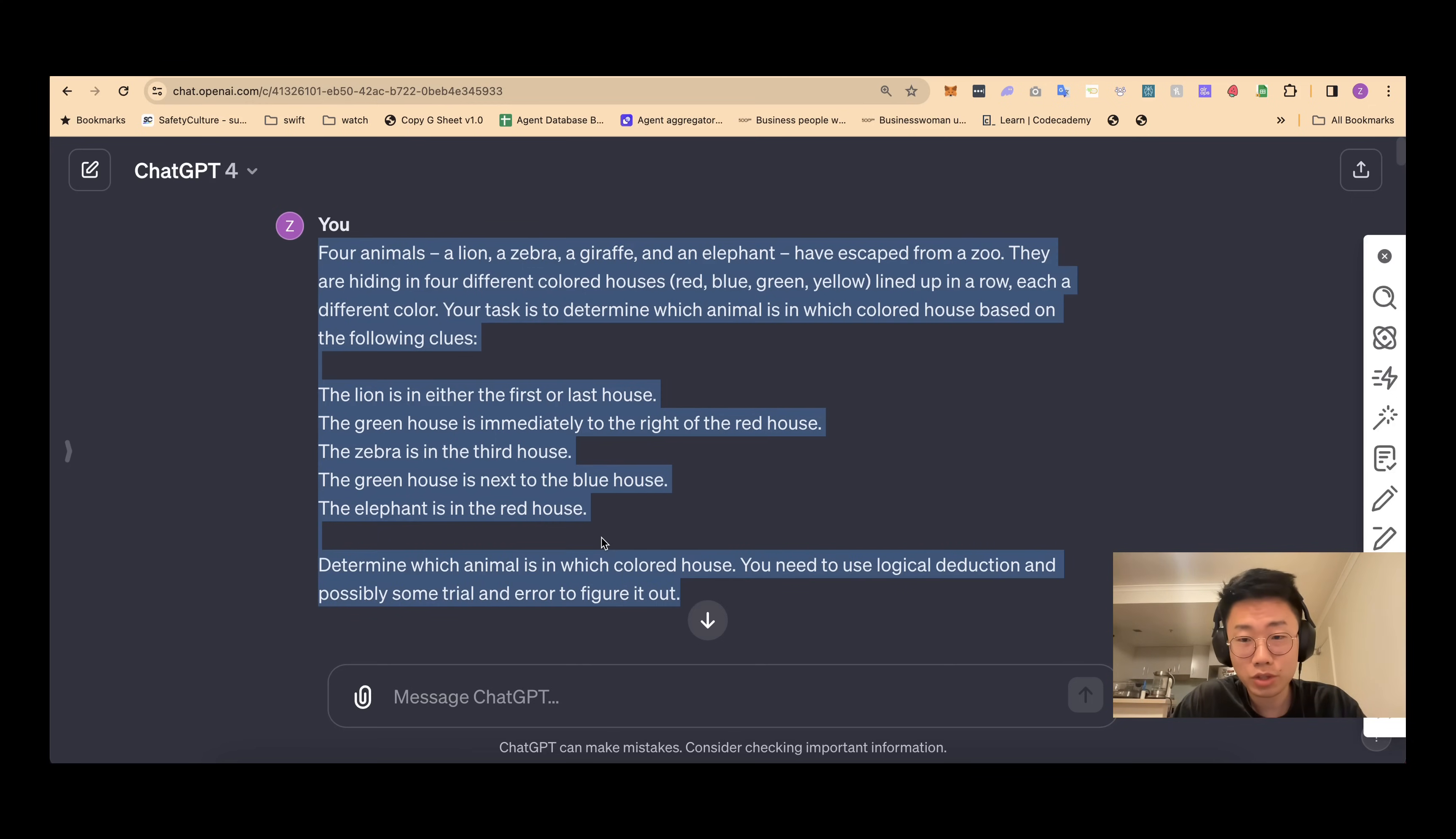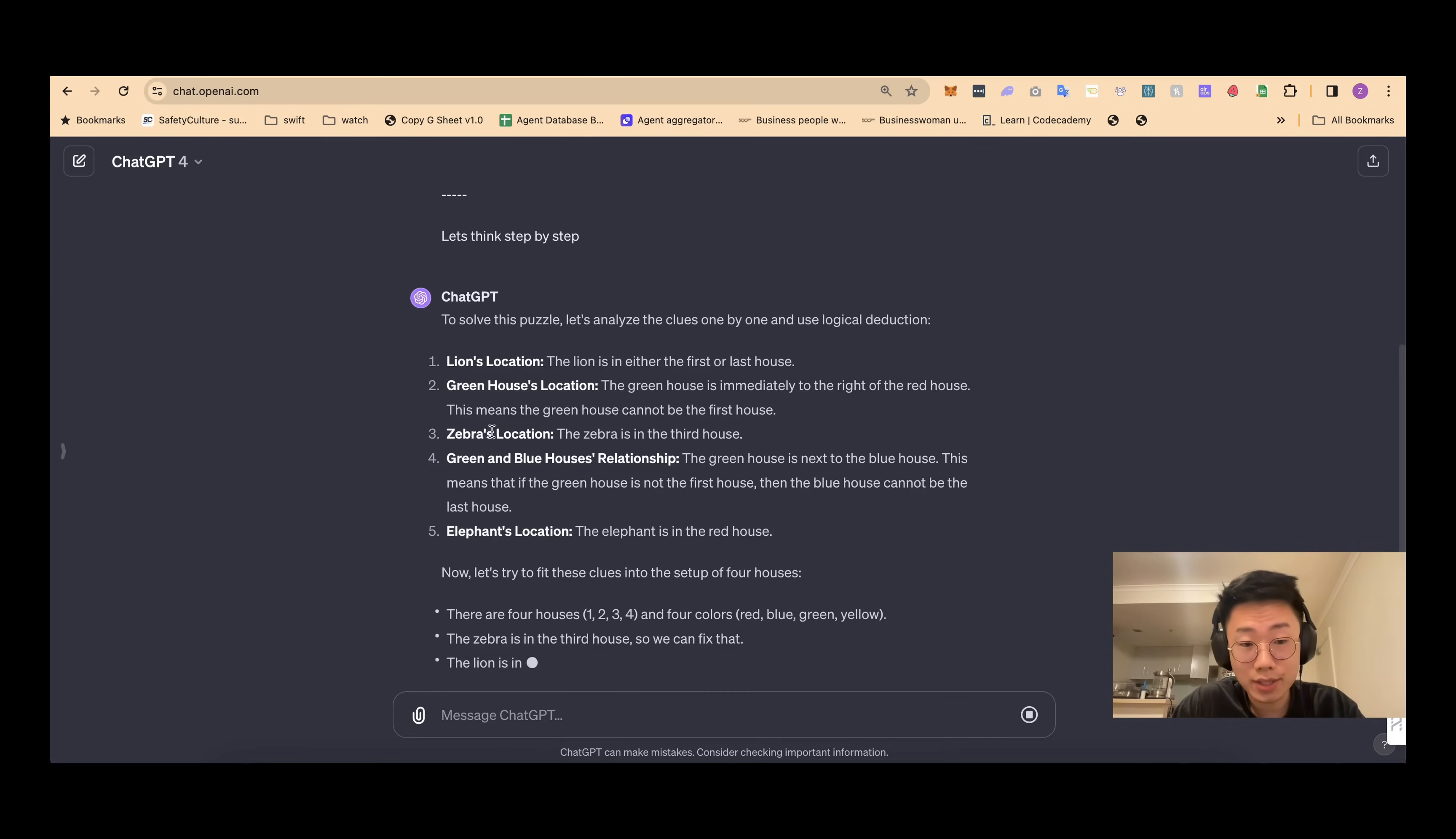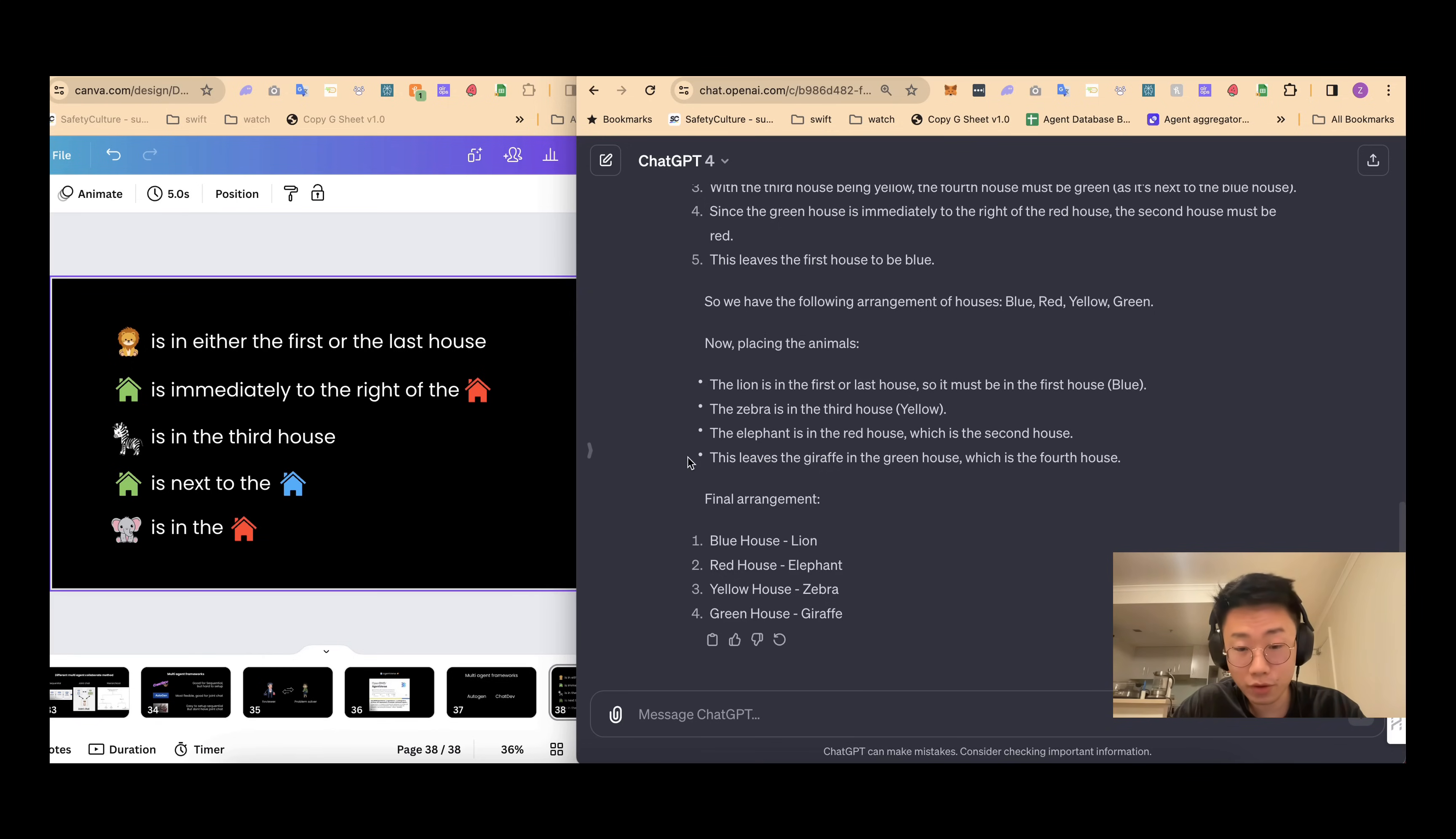And next, I tried to test whether GPT-4 can actually get it with chain of thought mechanism. So I can see that GPT-4 actually tried to think step by step and review the clues one by one to come up with an answer like this. To make it easier for us to review, I put all the clues on the left. So for the answer that GPT-4 generated, the first one, the lion is either the first or last house, which is correct.